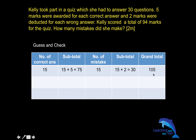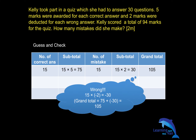Is this method correct? It's wrong. Why? Because the number of mistakes is 15 but the subtotal will not be 30. Rather it is 15 multiplied by negative 2, because two marks were deducted for each wrong answer. You might be scratching your head — that's a secondary one concept. You are only introduced to negative numbers in secondary school, so at this point you have no capability to solve this using the normal guess and check method. The grand total is not 105.